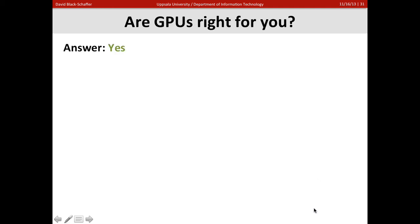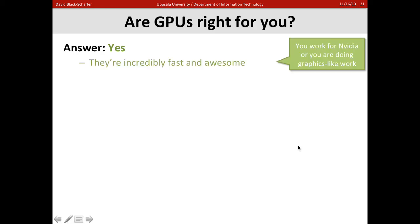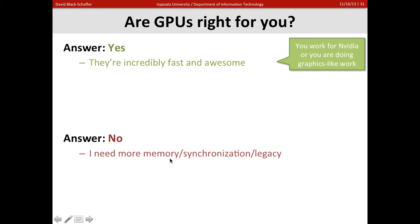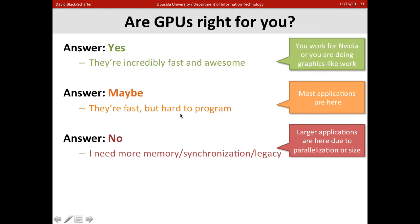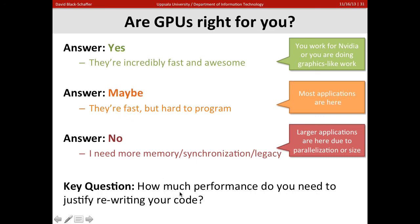So are GPUs right for you? If you work for NVIDIA or do graphics-like work, GPUs will do exactly what you want. But the answer may be no — GPUs today only have about six gigabytes of local memory, and many applications can't be parallelized well or are too large to fit. For most people, the answer is maybe: GPUs can be fast, but they're hard to program. The key question is how much performance benefit do you need to justify rewriting your code? If you can't get a 10x improvement — and most applications won't — it may not be worth it.